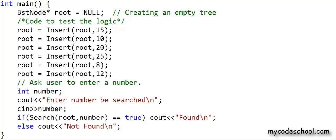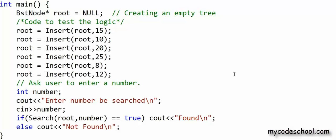In the main function we have a pointer to BST node named root to store the address of the root node of the tree. We initially set it as null to create an empty tree, then make some calls to the insert function to insert data in the tree. Finally we ask the user to input a number and make a call to the search function. If search returns true we print 'found', else 'not found'. Let's see what will happen in memory when this program executes.